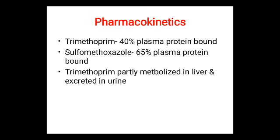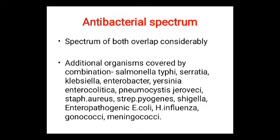Pharmacokinetics of cotrimoxazole: trimethoprim is 40% plasma protein bound; sulfamethoxazole is 65% plasma protein bound. Trimethoprim is partly metabolized in the liver and excreted in urine. The spectrum of both drugs overlaps considerably; additional organisms covered by this combination include Salmonella typhi, Serratia, Klebsiella, Enterobacter, Yersinia enterocolitica, Pneumocystis jirovecii, Staphylococcus aureus, Streptococcus pyogenes, Shigella, enteropathogenic E. coli, Haemophilus influenzae, gonococci, and meningococci.